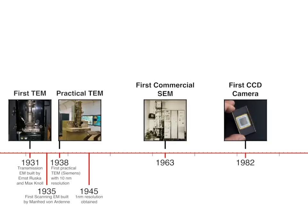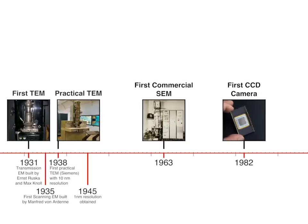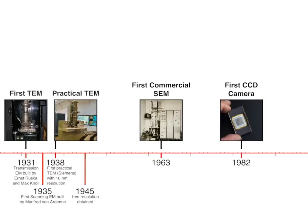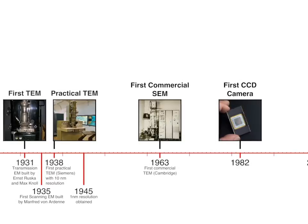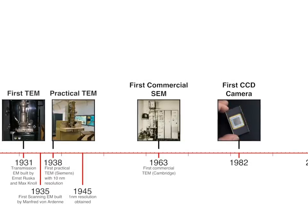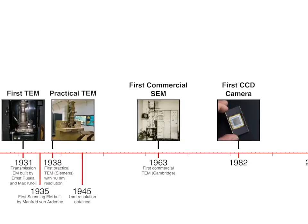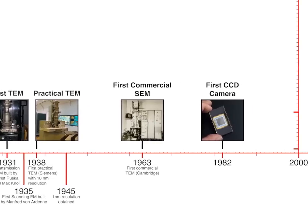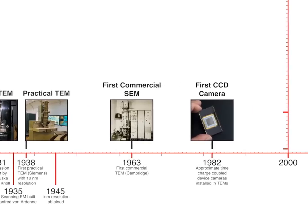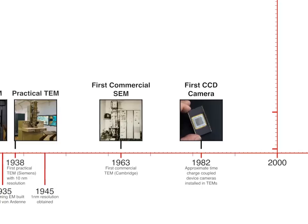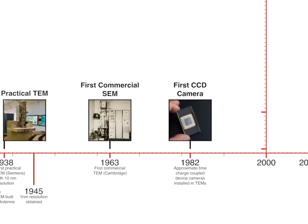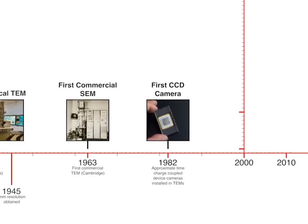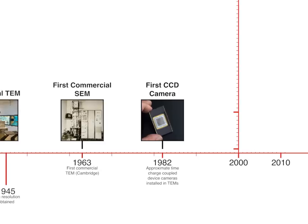In 1945, electron microscopes had achieved the milestone of one-nanometer resolution. In 1963, the world's first commercially available scanning electron microscope came out of Cambridge. And around 1982, charge-coupled devices were first installed into electron microscopes. Up until this point, electron microscopes used film, but using CCD cameras, images could be saved directly to hard drive.